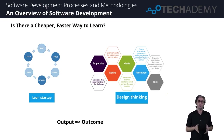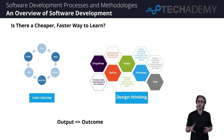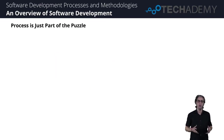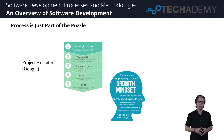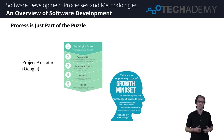This also led team members and organizations to concentrate on the result and not just the output they create. As all these processes and methodologies were evolving, industry also realized that process is just part of the puzzle. We need to think about soft issues such as individual psychological safety, motivations, growth mindset, and many other ideas. As we can see, in the last couple of years, the software industry has evolved quite a bit and continues to get better and better.